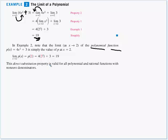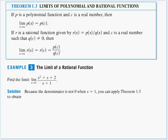This direct substitution property is valid for all polynomial and rational functions with non-zero denominators — try direct substitution first. Theorem 1-3: if p is a polynomial function and c is a real number, then the limit as x approaches c of p of x equals p of c — just plug c in for x. If r is a rational function given by r of x equals p of x divided by q of x, and c is a real number such that q of c is not zero, then the limit as x approaches c of r of x equals p of c over q of c.